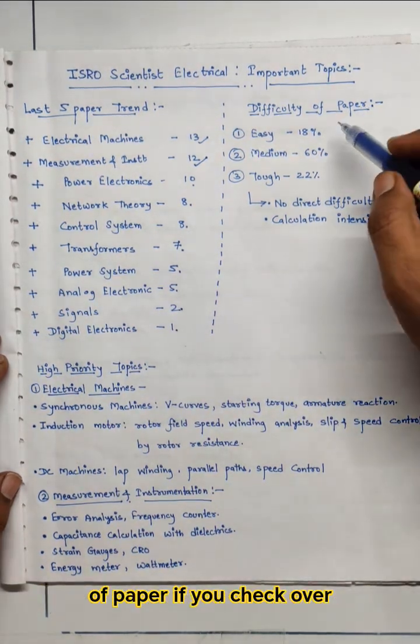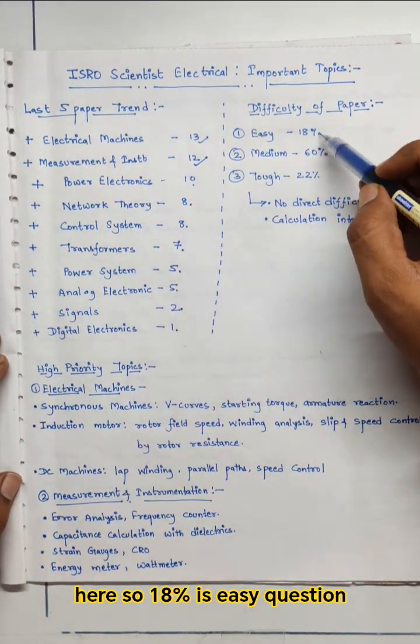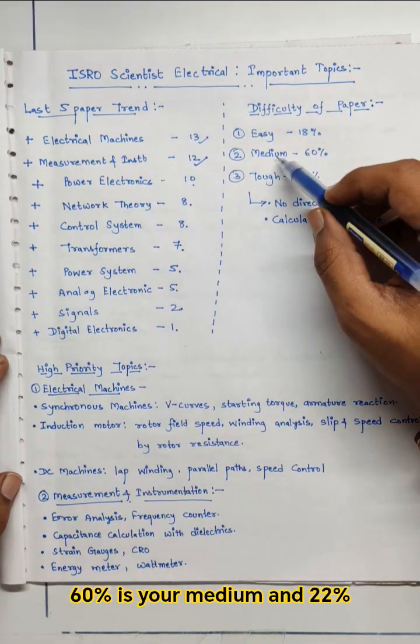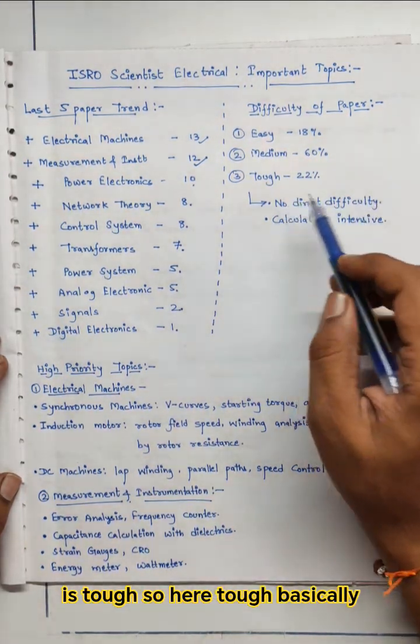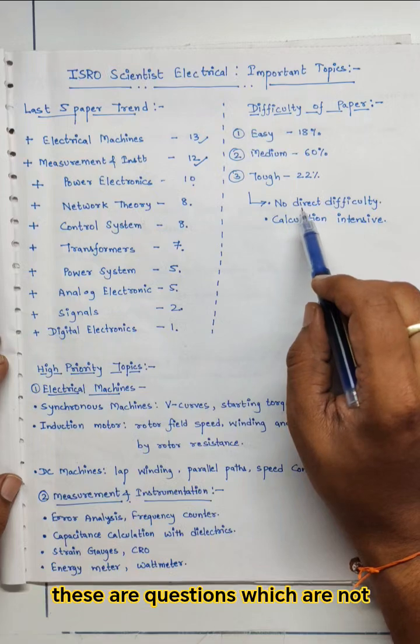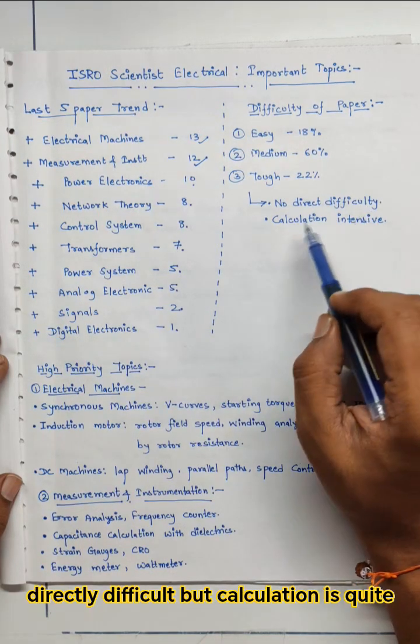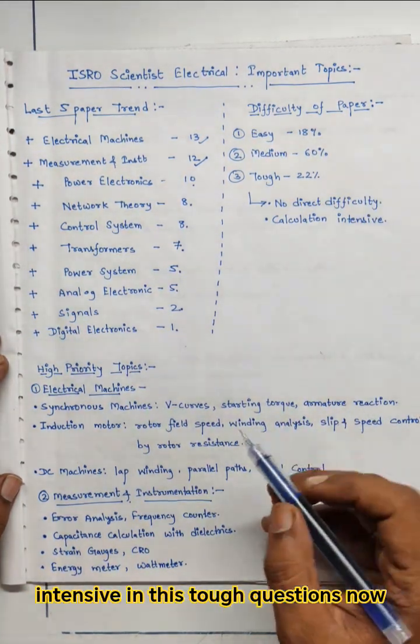So the difficulty of paper if you check over here: 18% is easy question, 60% is your medium, and 22% is tough. So here tough basically these are questions which are not directly difficult, but calculation is quite intensive in these tough questions.